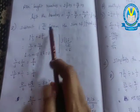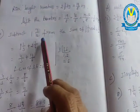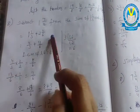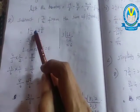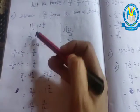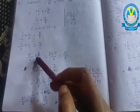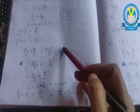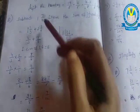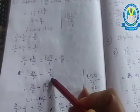Eighth one. Subtract one and seven by twelve from the sum of one and one-third and two and one-sixth. First find the sum of these two. Change mixed fractions into improper, then change to like fractions by finding the LCM. Add them. The answer is twenty-one by eight. Now subtract from this.